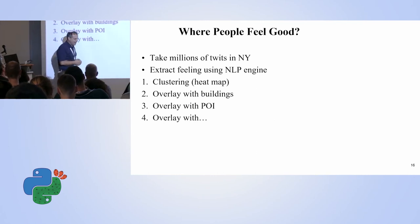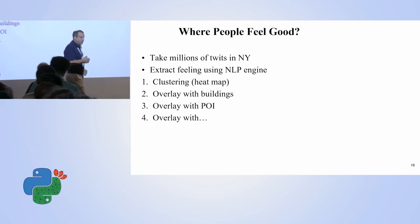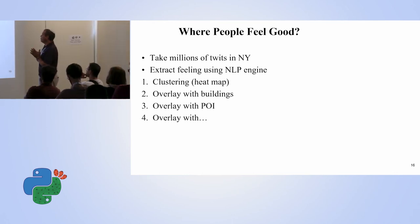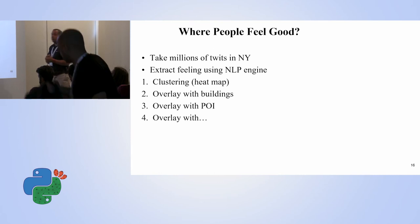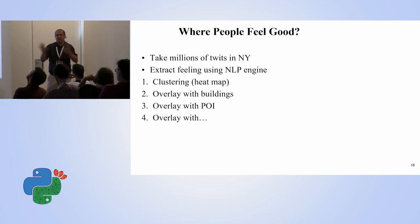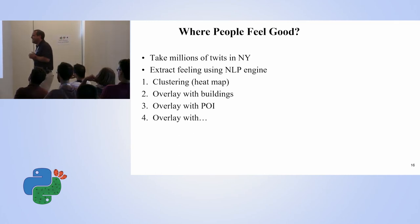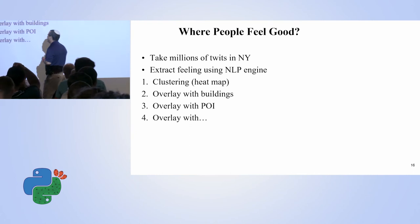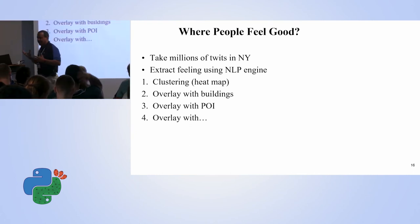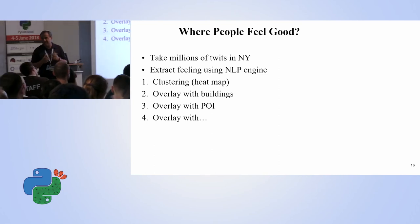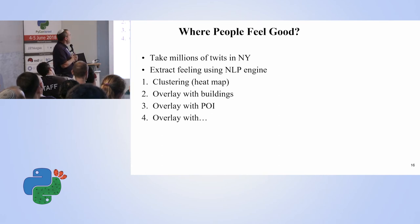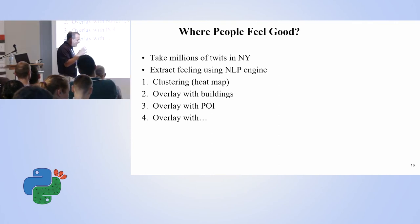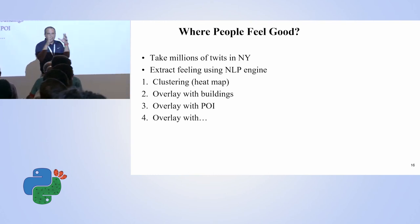Let's summarize and answer the question from the first slide: where do people feel good? We took millions of tweets in New York — why New York and not Israel? Because in Israel nobody tweets much. We extracted the feeling from the tweet text using an NLP engine. The first thing we did was perform clustering. This is where many GIS projects end, because it's what you can get from the data itself.